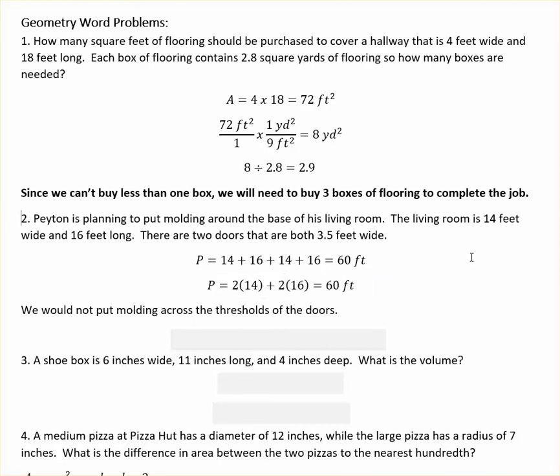The other way you may remember doing perimeter is saying there's two widths which were 14 and two lengths which were 16, and multiply that up that way to get 60 feet. But if you were putting molding around the bottom of the walls, you would not put molding across the threshold of the door. Everybody would trip on it. So you would take the 60 feet around and subtract off the two doors, which means you need 53 feet of molding to complete the job.